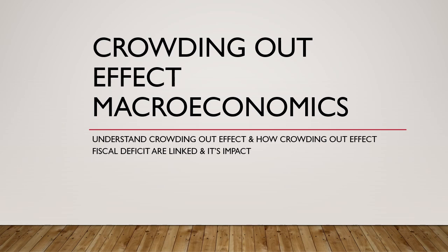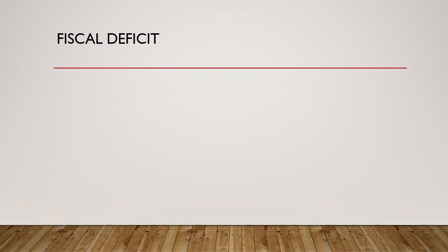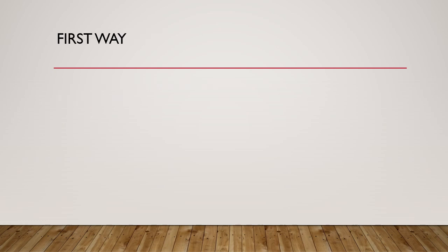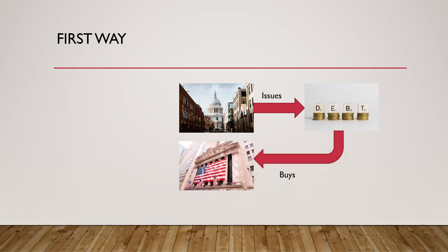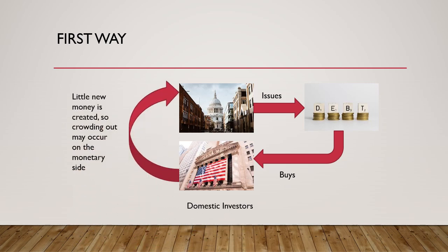What is fiscal deficit? In short, fiscal deficit is the excess of government spending over its revenue. There are two broad ways the government can fund its fiscal deficit. In the first way, the government issues debt in the market, which is bought by domestic private investors — it is the domestic private investors' money that funds the fiscal deficit of the government. In this case, little new money is created in the economy.